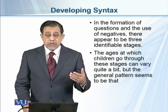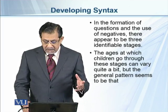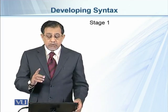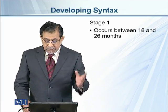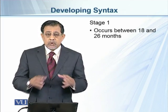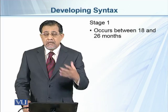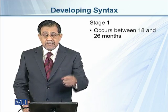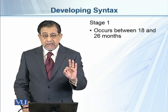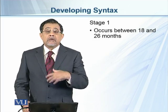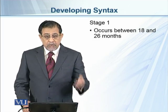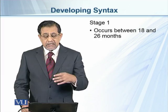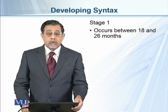There appear to be three stages through which children learn interrogative and negative sentences. The ages at which children go through these stages can vary quite a bit, but the general pattern is: Stage 1 occurs between 18 and 26 months. In Stage 1 the child begins to make interrogative and negative sentences, though not yet in the complete adult form. This is the time when the child starts making an interrogative sentence and also a negative sentence.